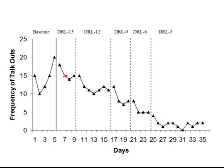If he had 15 or fewer talk-outs, he could earn a reinforcer. For him, the reinforcer was getting to talk — he loved it. So he could have five minutes at the end of class to get up and do a mini-presentation about something he was interested in. The teacher gave him a list of topics to choose from because it might have been scary for him to completely come up with them on his own.